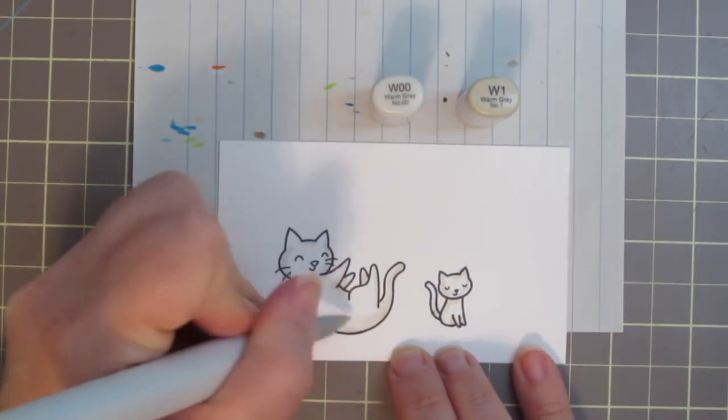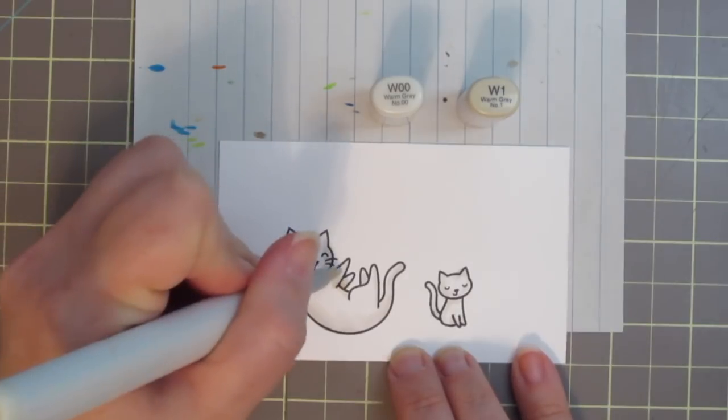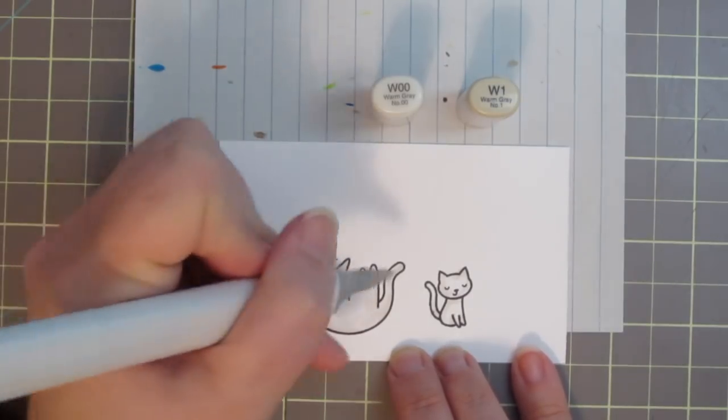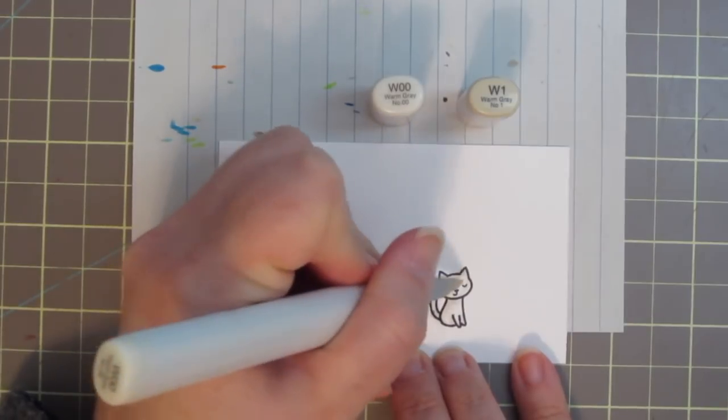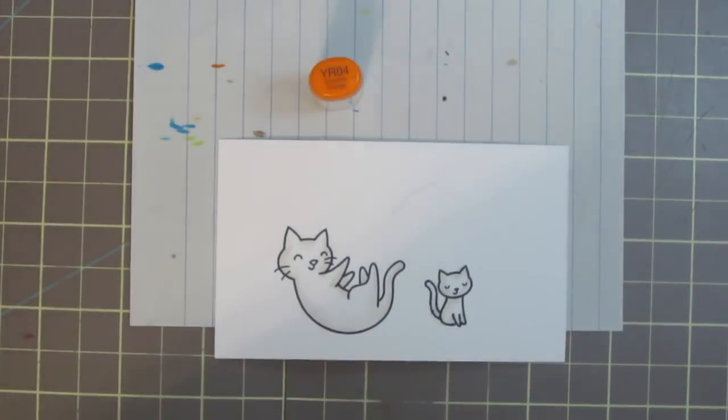It kind of gives me a guideline for the rest of the images. So I'm going to start with that W1 and just lay that in my darkest areas, and then I'll blend out with the W00, leaving the centers of the body white.